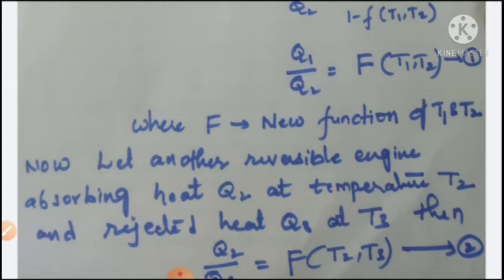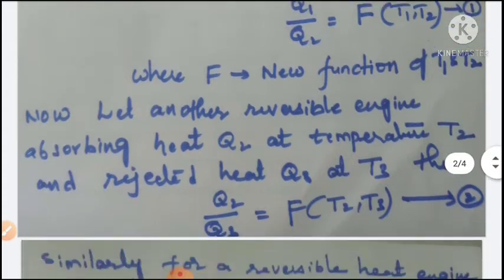Now let us consider another reversible engine that absorbs heat Q2 at temperature T2 and rejects heat Q3 at temperature T3. Then, according to equation 1, we can write Q2 by Q3 equal to F(T2, T3) — that is equation number 2.